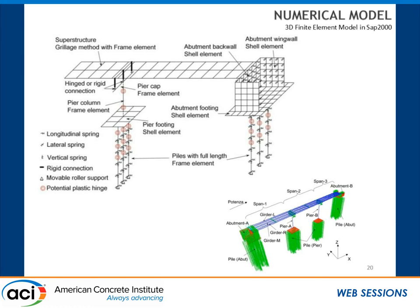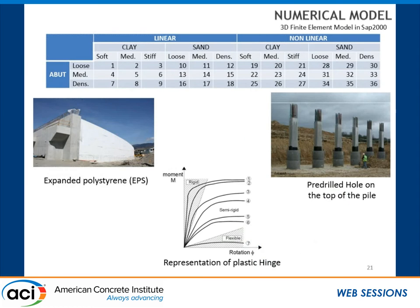Our SAP2000 model uses frame elements for the superstructure, frame elements to model the piers and piles, area spring elements attached to shell elements representing the abutment, and line spring elements attached to the piles to consider soil-structure interaction. To capture the nonlinear behavior of concrete, we use plastic hinges, allowing us to model the nonlinear stage and the redistribution of forces. We established 36 simulations considering different stiffness and soil densities around the piles, comparing the linear Terzaghi approach and the nonlinear American Petroleum Institute approach, and different soil densities behind the abutment. Special cases were also considered to reduce stresses on the piles and deck: expanded polystyrene, pre-drilled hole at the top of the pile, and plastic hinges based on moment-curvature and moment-rotation relationships.